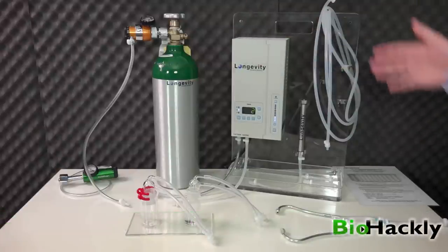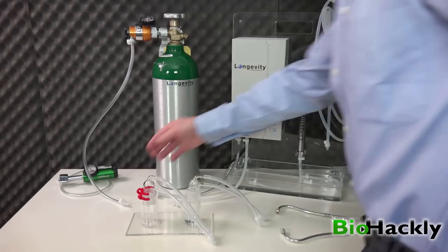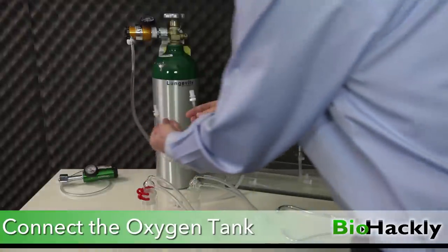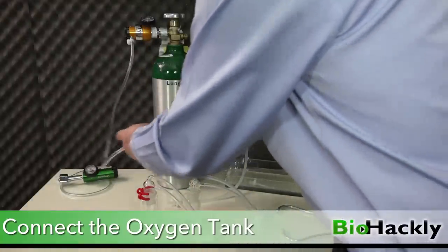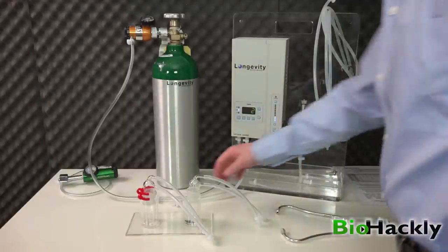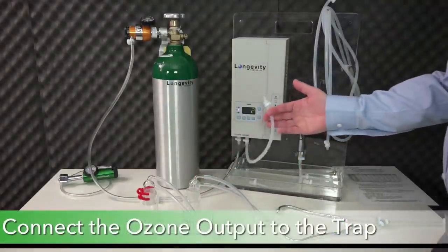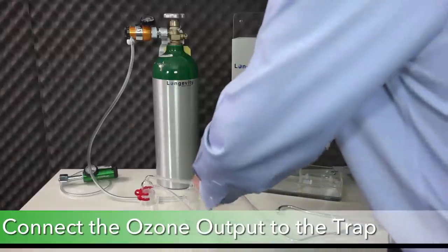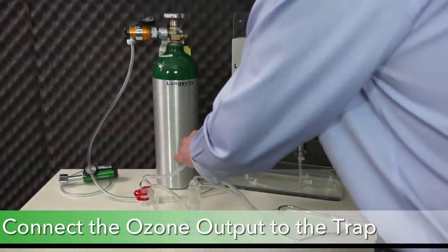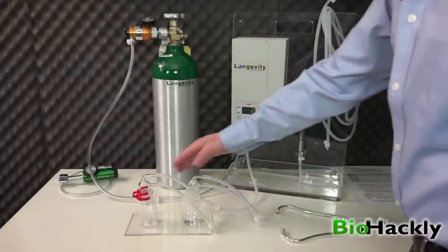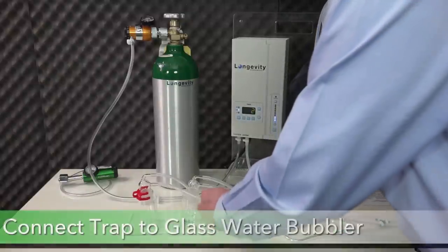Let me show you how to connect all this up. I'll take the clear line from the oxygen regulator and connect it to the clear line in on the ozone generator—that's a quick connect. Here's the ozone output from the ozone generator—it's a silicone line. We'll run that into the top of the trap, and that only goes one way.